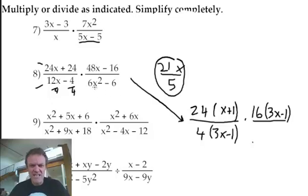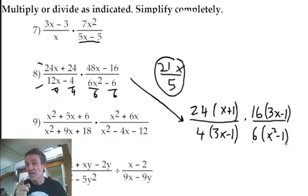Right, I can take a 6 out of this bottom one. And if I do, think about it, divide by 6, divide by 6, that's going to give me x² minus 1. x² minus 1. Okay, so I've done all the factoring, but have I?